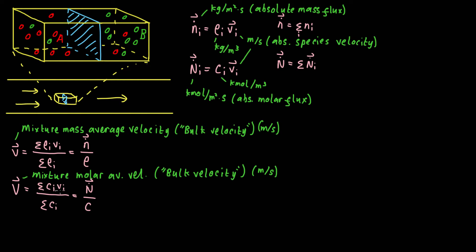And this can be a little confusing, because if you're not very rigorous you can refer to bulk velocity, but depending on the situation that might mean the mixture mass average velocity or the mixture molar average velocity. And what's worse is that the mixture mass average velocity does not necessarily have the same value as the mixture molar average velocity.